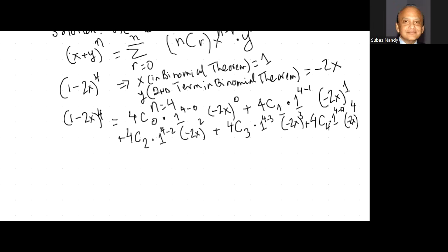Plus 4C4, combination of 4 items taken from 4, multiplied by 1 to the power of 4 minus 4, times minus 2x exponent 4 — and we stop there because we have done all we could do. Now, 4C0: on your TI-84 type 4, then math, highlight PROB, scroll down to 3 which is nCr, and it equals 1.